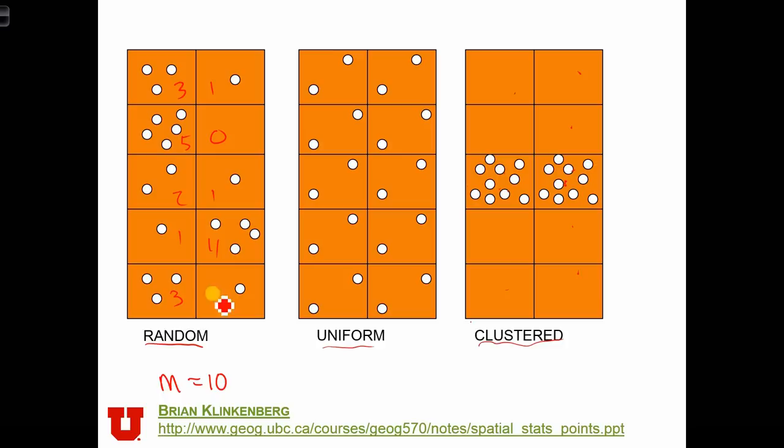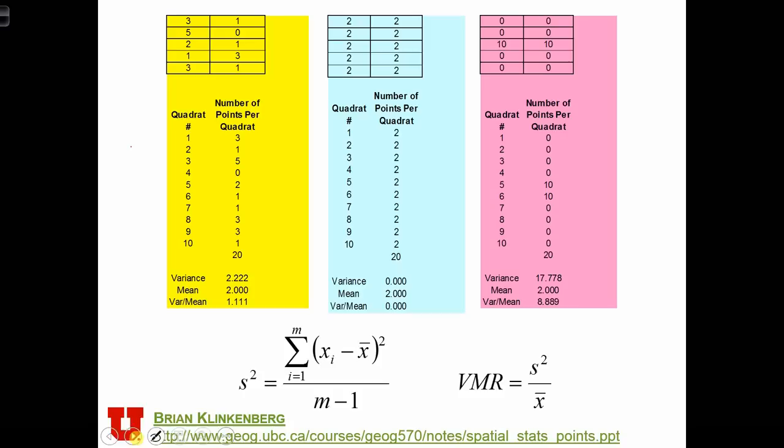And in this case, we have 0, 0, 0, 0, 10, 10, 0, 0, 0, 0. And here we had 2s everywhere. Let's go back. And we see that that's what we have done to create these tables.